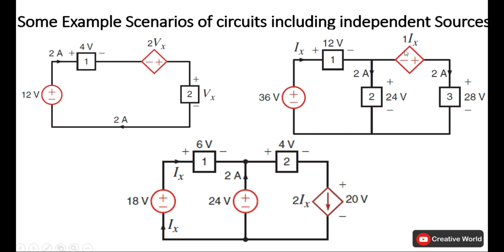The current controlled voltage source has an output value of one multiplied by the value of Ix. A third example is the current controlled current source whose value is dependent upon the value of Ix multiplied by factor two. Real-world examples of these dependent sources include the BJT, in which we control the base current with a multiplying factor to get an output current — making it a current controlled current source. Another example is the operational amplifier, in which we get output voltage controlled by input voltage with a specific gain, making it a voltage controlled voltage source.